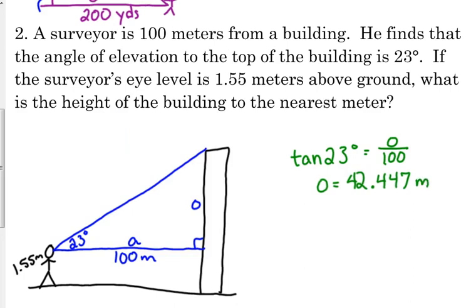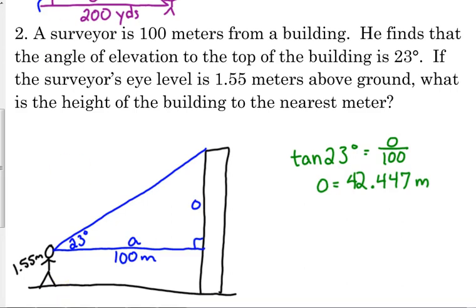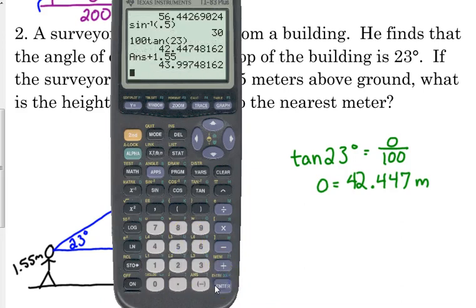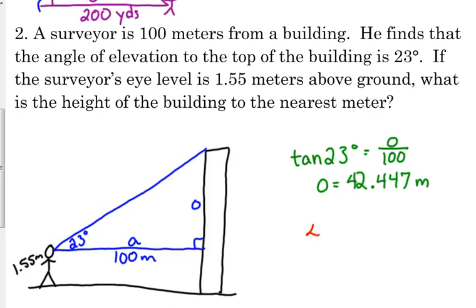Now, are we finished with the problem? No. So we've got to factor in the man's height. Okay, so we actually have to add 1.55 meters to that to get the actual height of the building. And it says to the nearest meter, so this building is 44 meters tall.